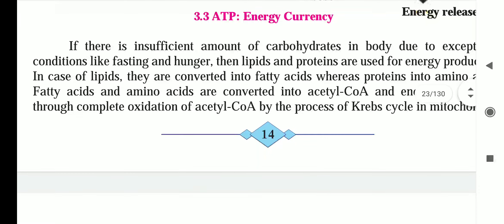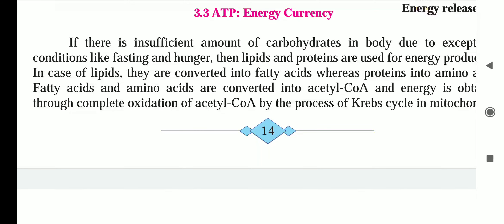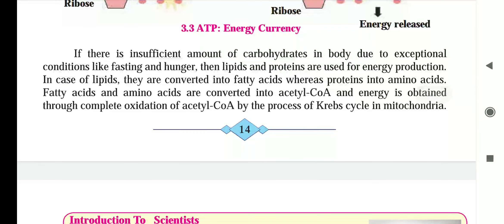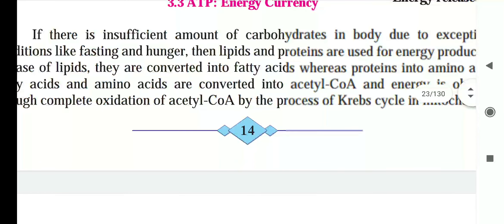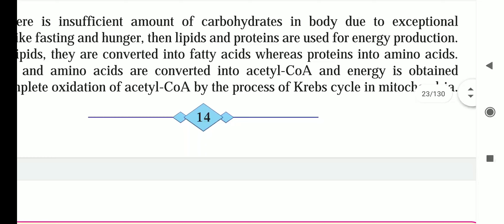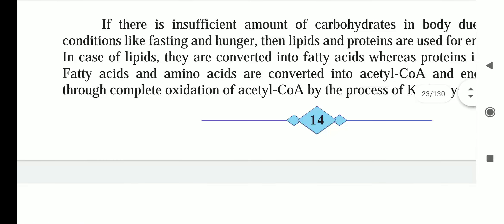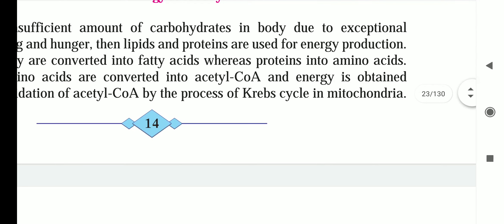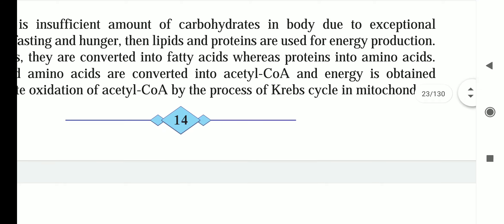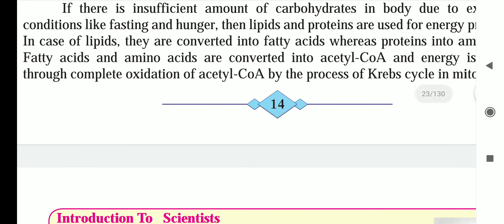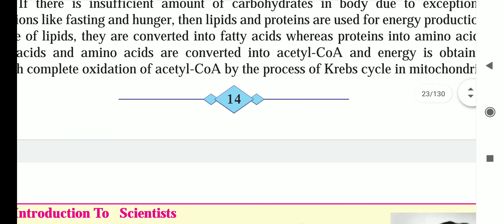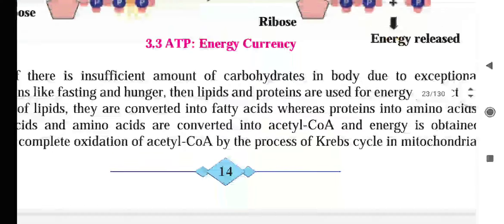If there is not a sufficient amount of carbohydrate in the body — due to conditions like fasting and hunger — then lipids and proteins are used for energy production. Lipids are converted into fatty acids, whereas proteins are converted into amino acids. Fatty acids and amino acids are then converted into acetyl coenzyme A, and energy is obtained through complete oxidation of acetyl coenzyme A by the process of the Krebs cycle in mitochondria.